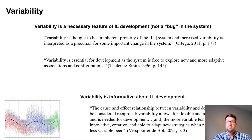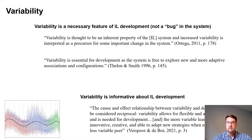It's also become clear in recent years that variability is considered a harbinger of developmental change — the degree of variability in interlanguage development gives us information about the underlying process. Differences in degree of variability lead to differences in interlanguage development. Verspoor and Debatt have said that the cause-and-effect relationship between variability and development should be considered reciprocal. Variability allows for flexible and adaptive behavior and is needed for development. In other words, there's no qualitatively new behavior or development if there's no variability.